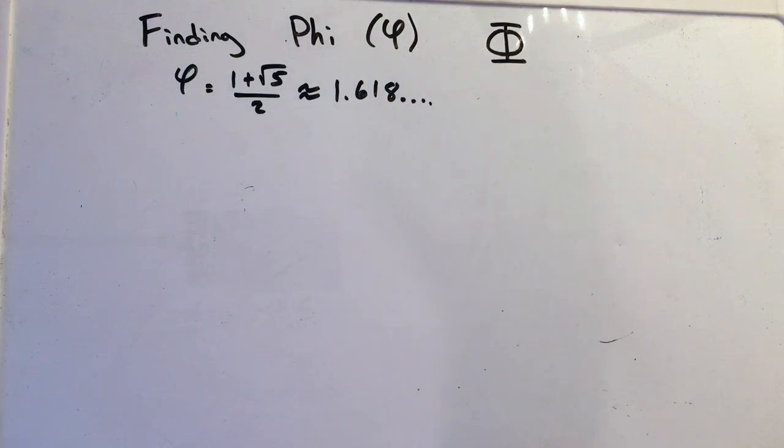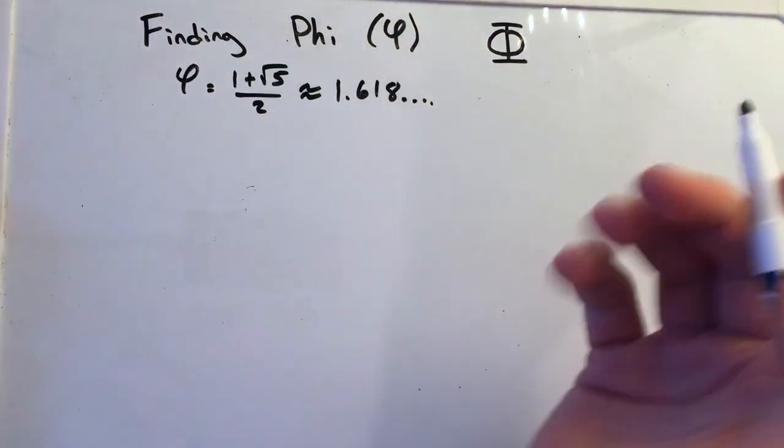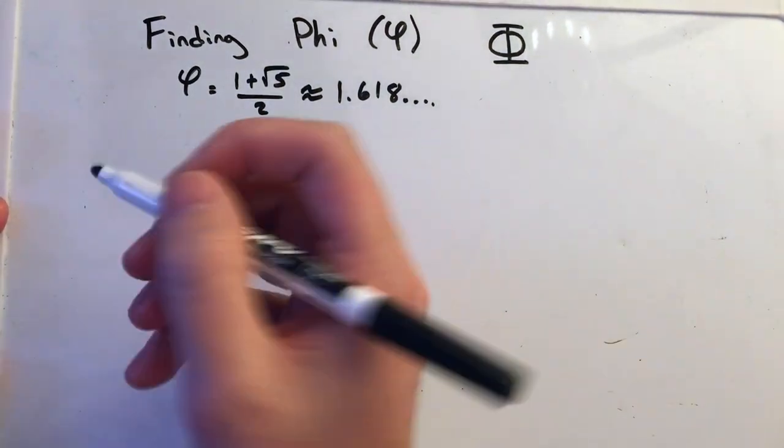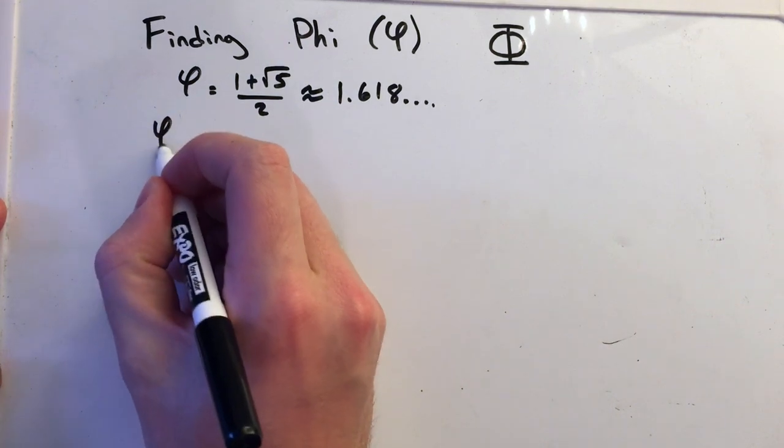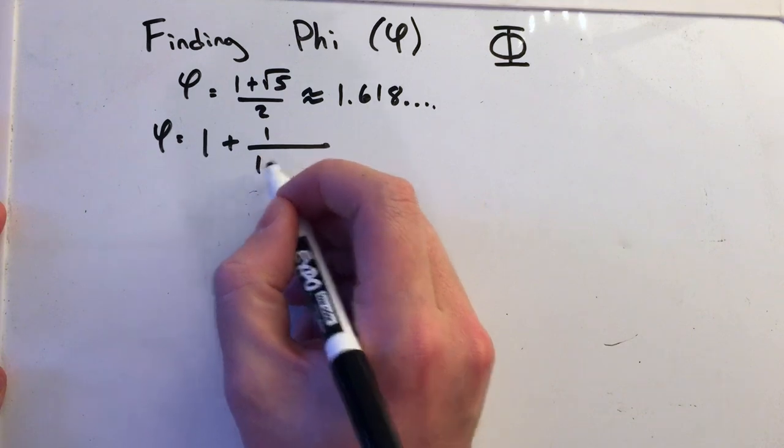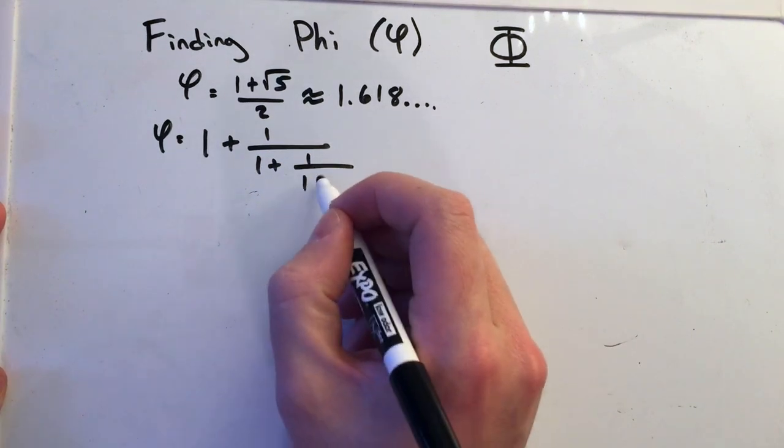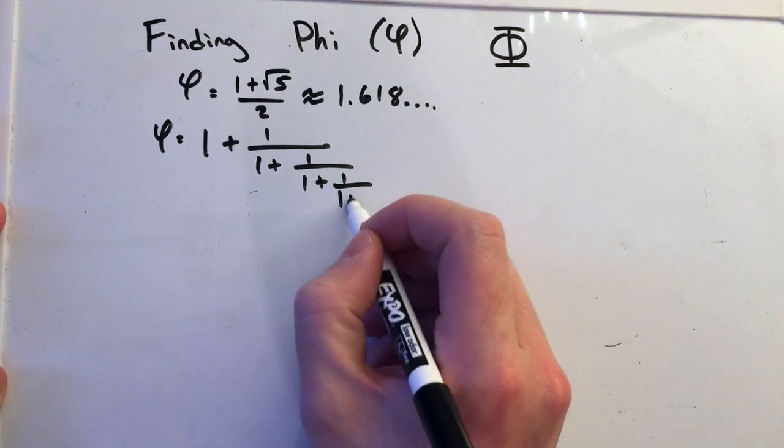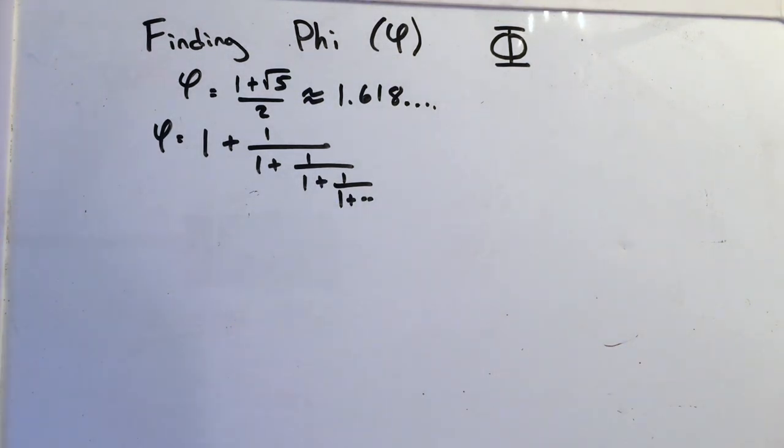What we're going to do today is talk about how we can calculate phi, a way to calculate phi, to get phi using continued fractions. So we know a continued fraction for phi is one plus one over one plus one over one plus one over one plus forever and ever, that continued fraction.